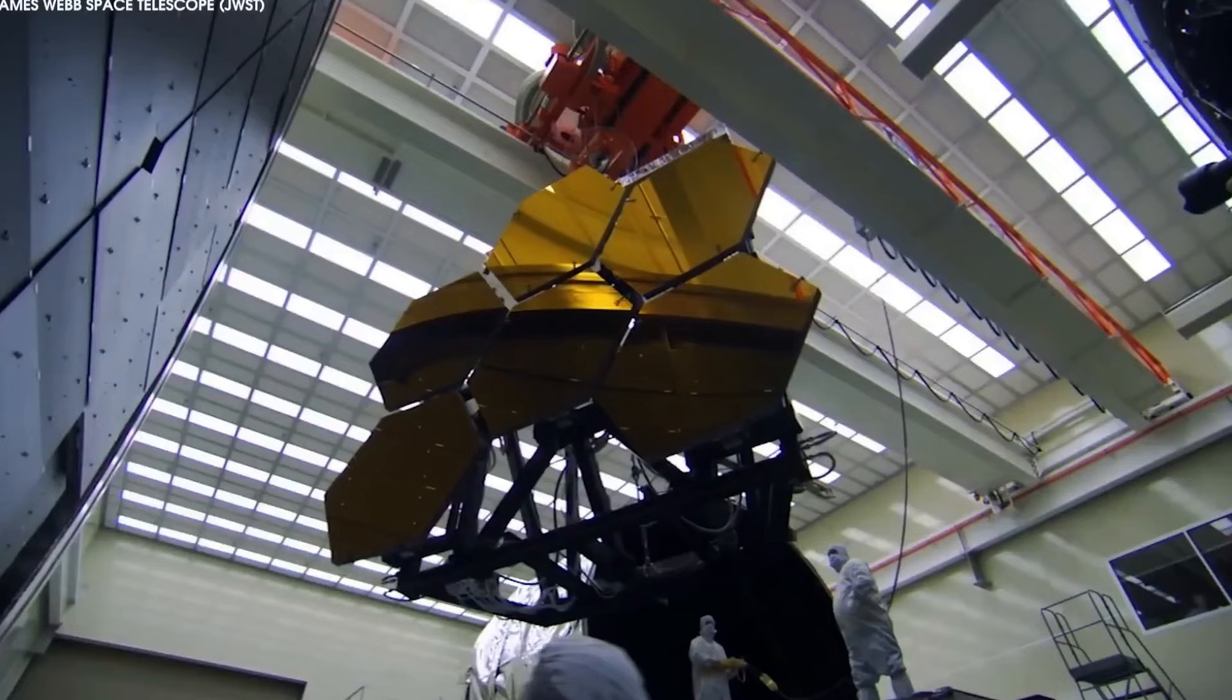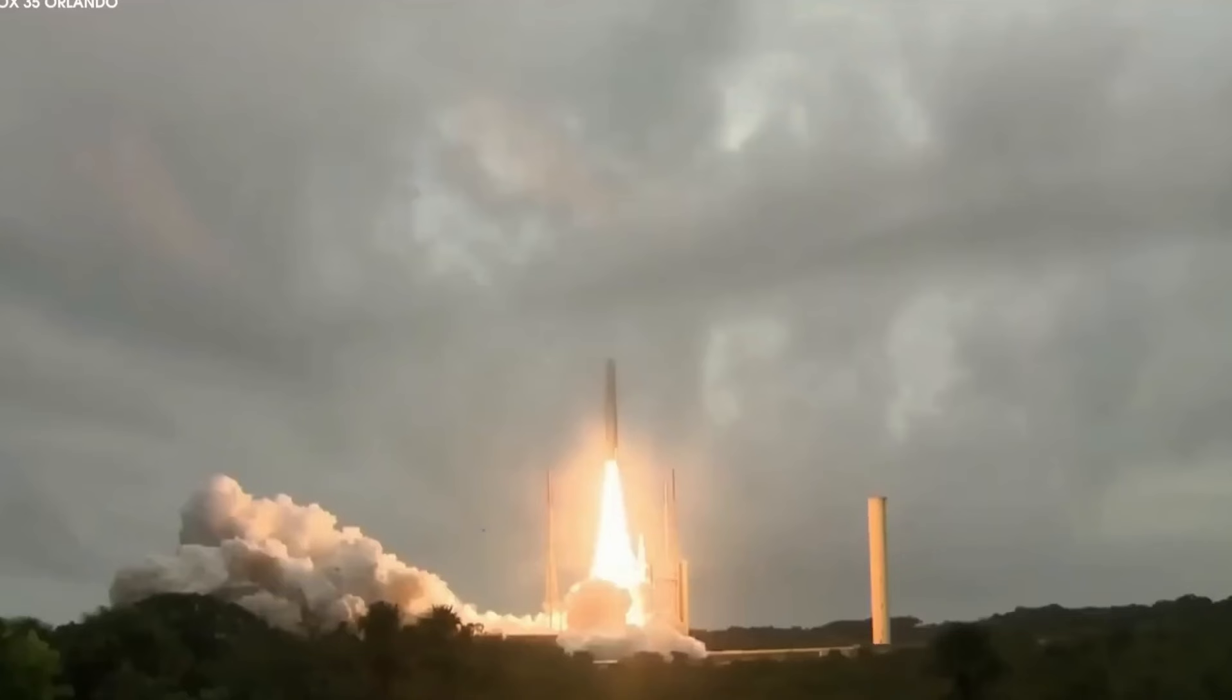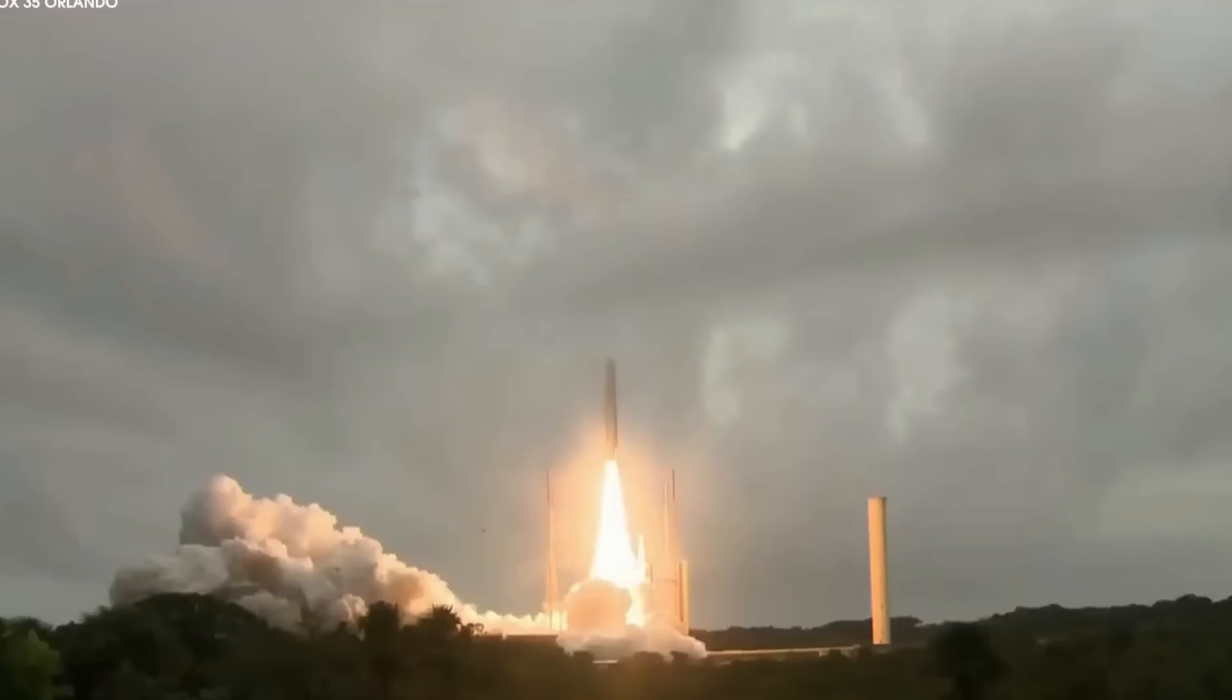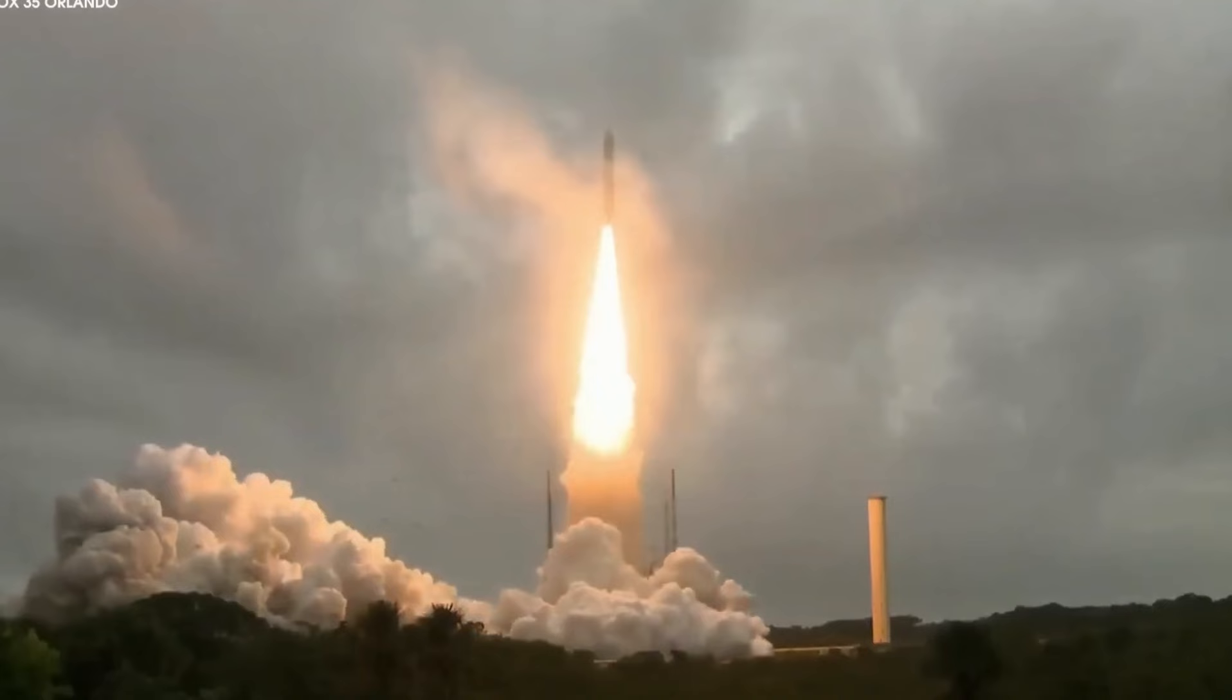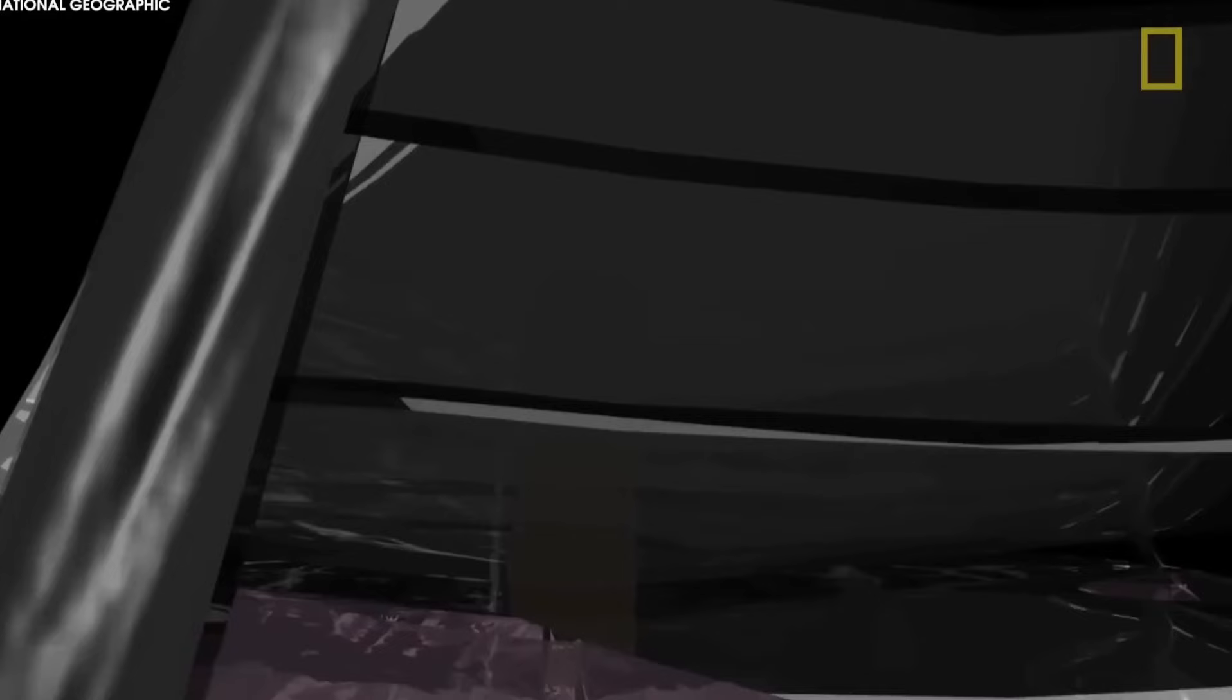But some regions of the running chicken, known no joke as Bok globules, are resisting this high-energy radiation and can be seen as dark, dense pockets of gas and dust sprinkled around the nebula.